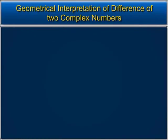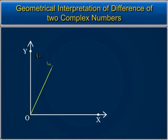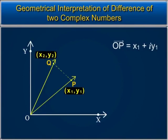To find the difference between two complex numbers, consider two complex numbers p equal to x1 plus i·y1, represented as vector OP, and q equal to x2 plus i·y2, represented as vector OQ in the Argand plane. The difference of these two complex numbers is the same as adding the first complex number and the negative of the second complex number.